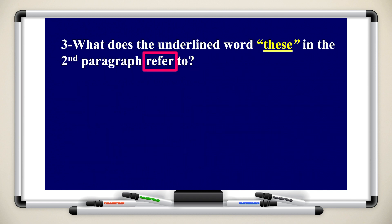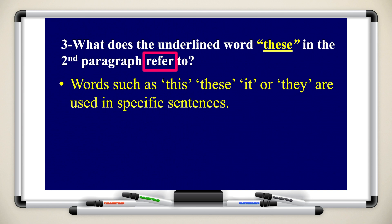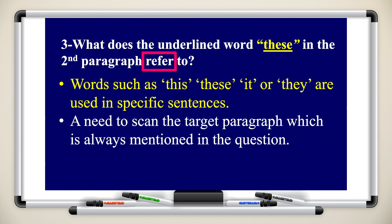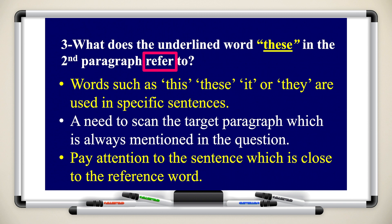Question number three: what does the underlined word 'these' in the second paragraph refer to? Words such as 'this,' 'these,' 'it,' or 'they' are used in specific sentences. You need to scan the targeted paragraph in which the article is given. Pay attention to the sentence which is close to the reference word.